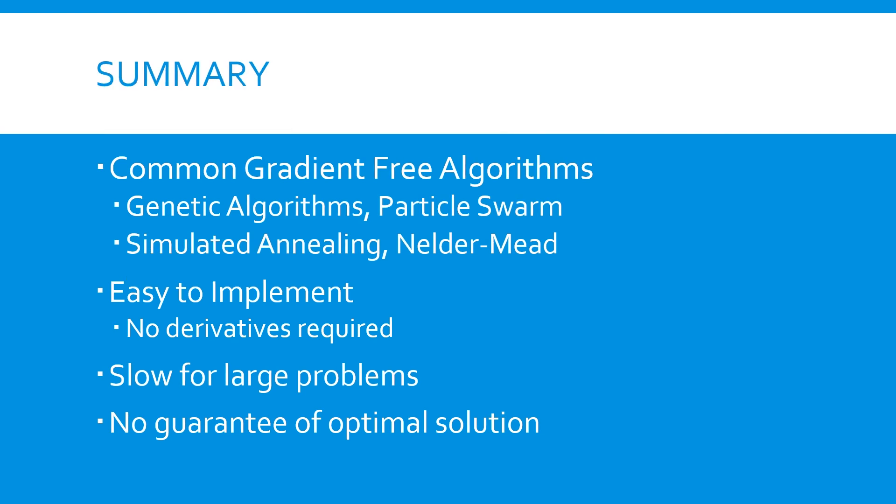In summary, a large variety of gradient-free optimization methods exist, each with their own strengths and weaknesses. Some of the most commonly used methods are genetic algorithms, particle swarm, simulated annealing, and the Nelder-Mead Simplex Algorithm. In general, gradient-free methods are easier to implement and have the advantage of not requiring derivatives. This means that they can be applied to problems that are discrete, discontinuous, or otherwise non-differentiable. Many of the algorithms also do a good job of searching for a global solution rather than a local solution.